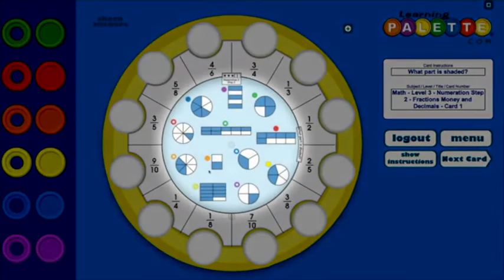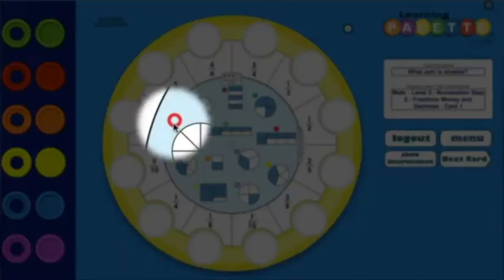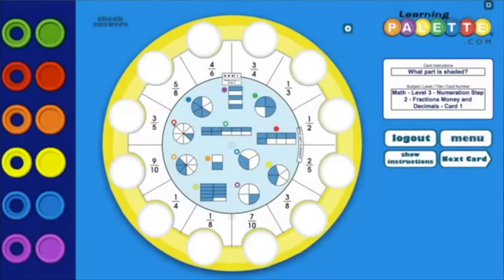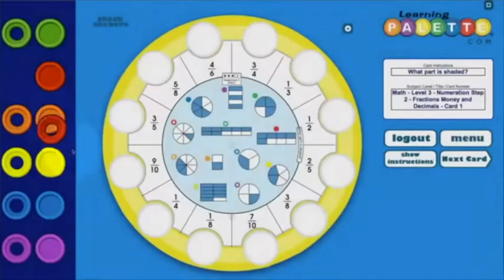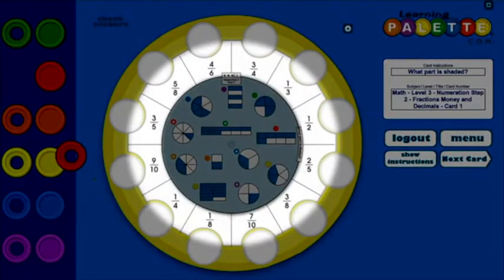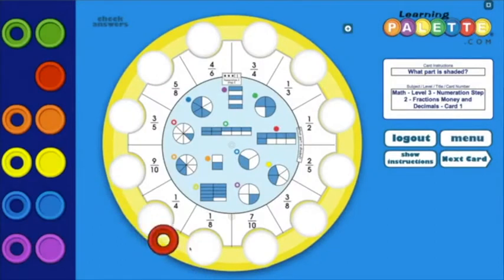Each card has 12 questions with colored icons next to the questions. Each icon represents a corresponding disk on the side. Around the outer edge are the answers. Simply drag the appropriate colored disk next to the correct answer.